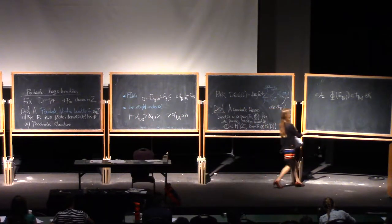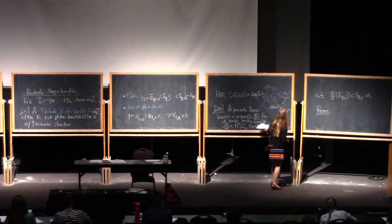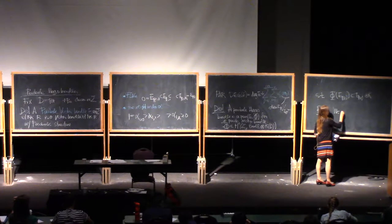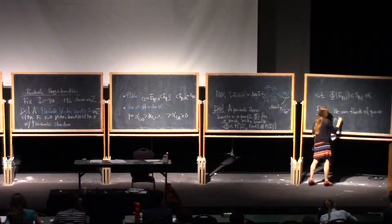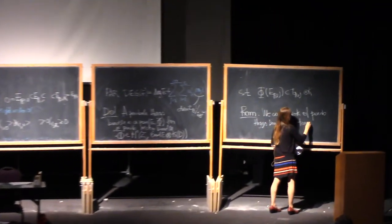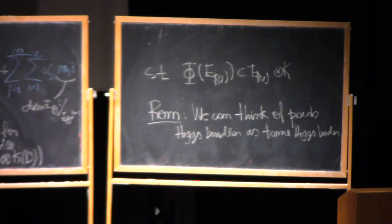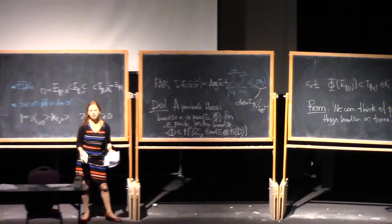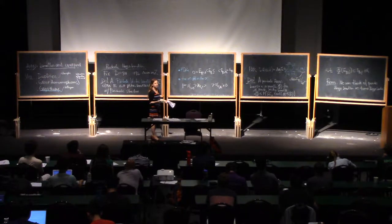We can think of parabolic Higgs bundles as Higgs bundles with tame singularities — having these marked points and having the Higgs field with tame singularities will be equivalent. So parabolic Higgs bundles are what people call tame Higgs bundles — Higgs bundles with singularities of degree 1 over those points. Once you have these, you can define parabolic stability and find the moduli space of parabolic Higgs bundles, which is the space we want to associate to quiver varieties.